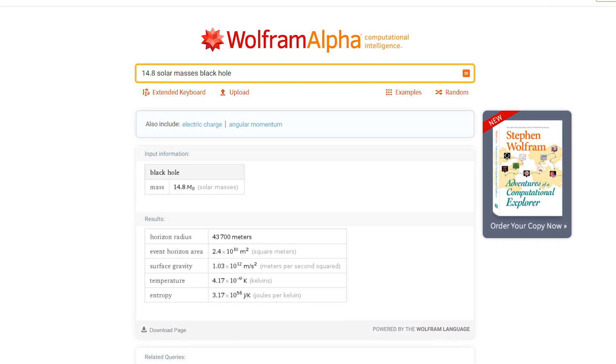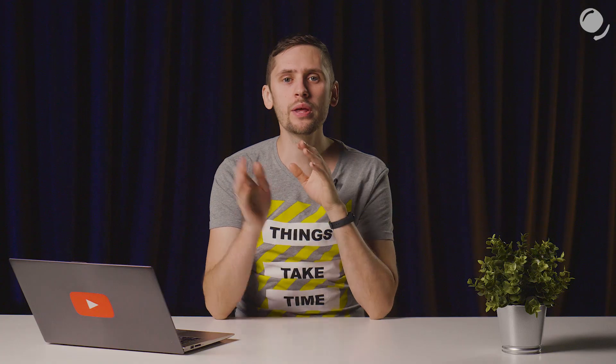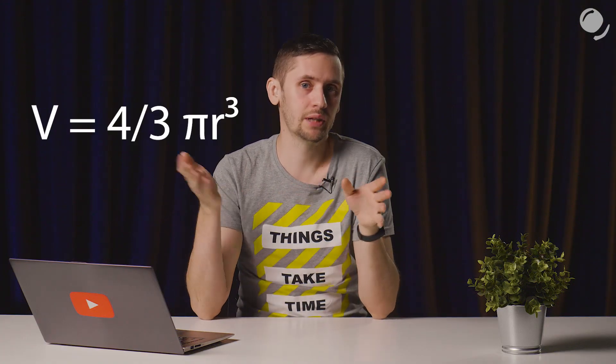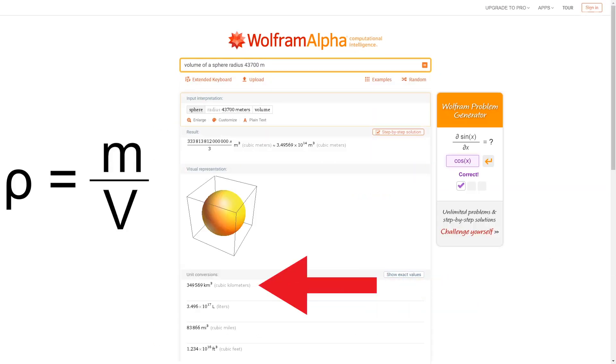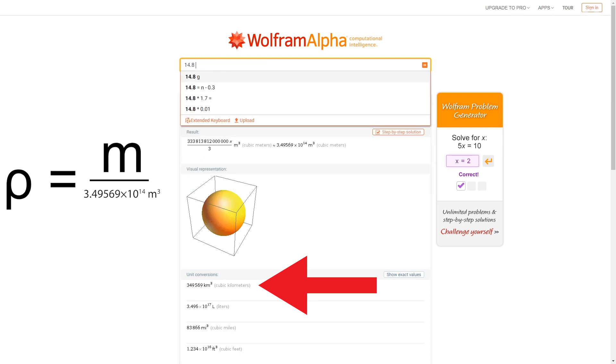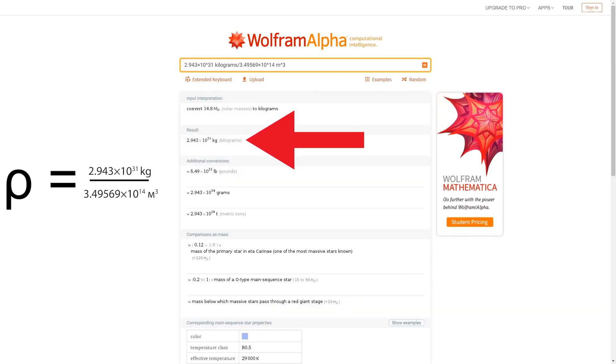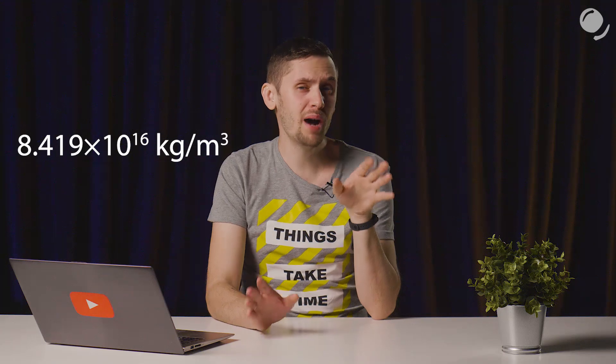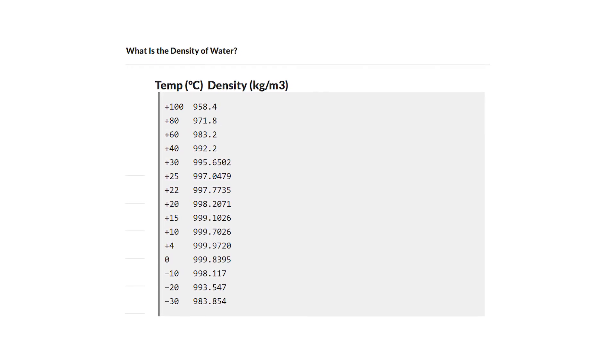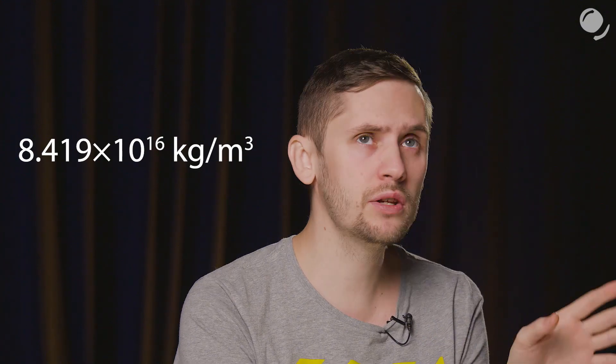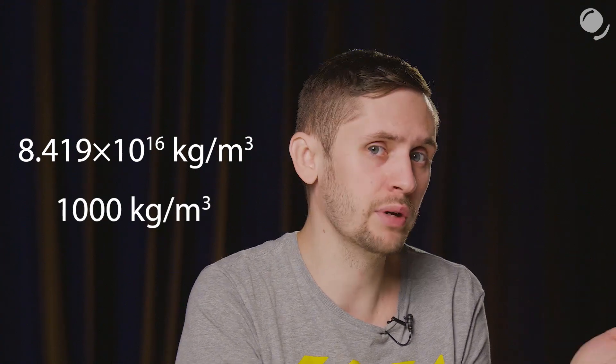By the way, if we just type in 14.8 solar masses black hole, it will tell us all of the basic parameters including event horizon radius. Knowing the radius using this formula, we can calculate the volume, or we can still use Wolfram. We get 349,569 cubic kilometers, but we need that in meters. And let's convert mass into kilograms and we get this much. Now we divide mass by volume and we have the density. How much is that denser than water? Its density changes depending on temperature and other factors. For convenience sake we'll use a thousand kilograms per cubic meter.